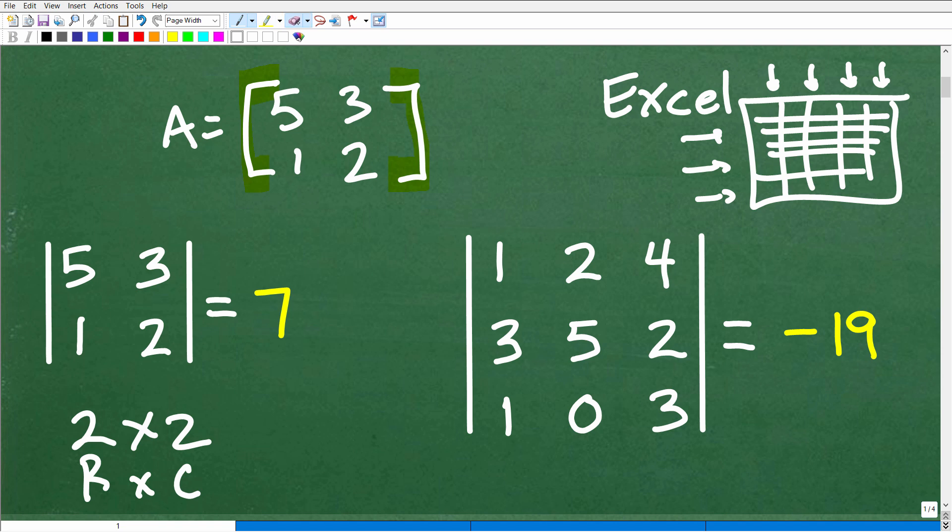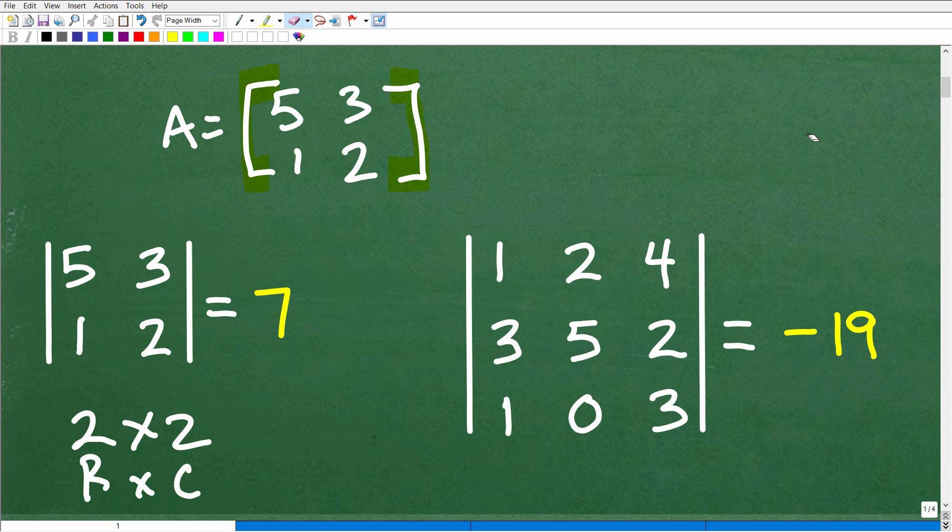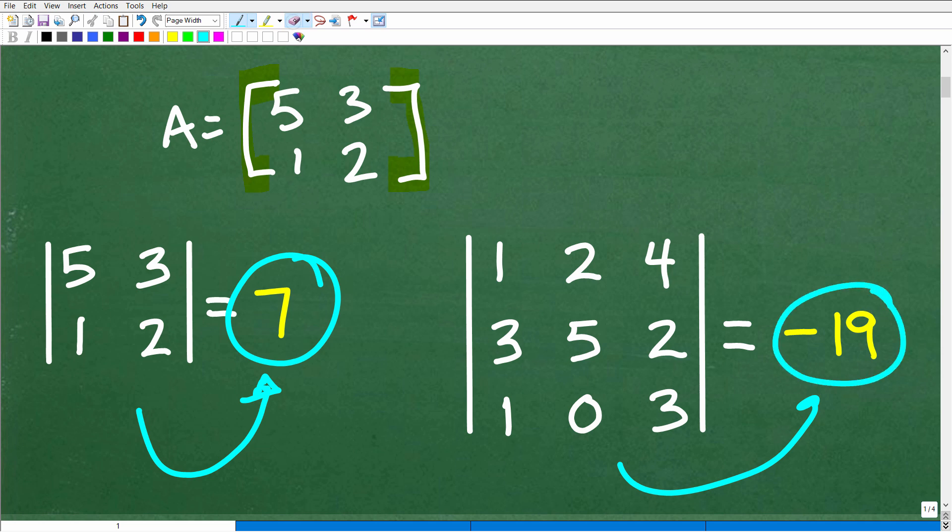Once we have a matrix, we can do several things with a matrix and various matrices. If we have a square matrix, i.e., a 2 by 2, a 3 by 3, equal number of rows and columns, we could find this thing called a determinant. A determinant is just an associated number with a square matrix. So in this case, the answer here for this 2 by 2 is 7, and the determinant for this particular 3 by 3 is negative 19. So I kind of gave you a little bit of a mini lesson there on the concept of what a matrix is and what a determinant is.